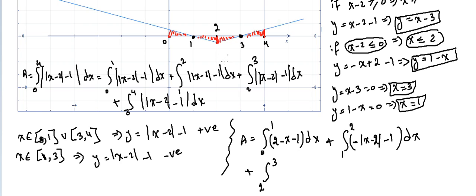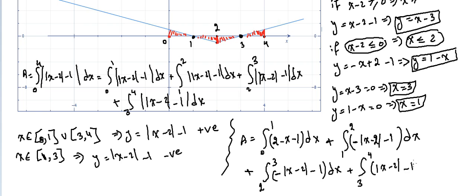If we substitute a value from 2 to 3, any value makes y — which is |x-2| minus 1 — negative. That's why I multiply with negative 1 to remove the outer absolute value, giving minus |x-2| minus 1 dx. Plus the integral from 3 to 4, which is a positive number because it's above the x-axis. Substituting any value from 3 to 4 gives a positive number, so I leave it as is: |x-2| minus 1 dx. It's the same as the first part we did.